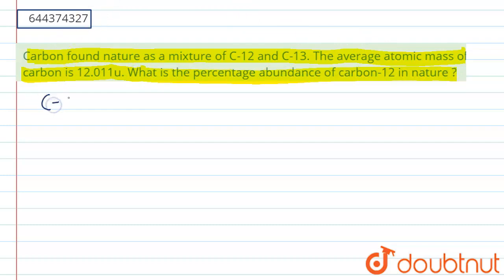Here carbon-12 and carbon-13. Suppose we have x percent abundance of carbon-12, so we have 100 minus x percent abundance of carbon-13, because in total we have a hundred percent abundance.